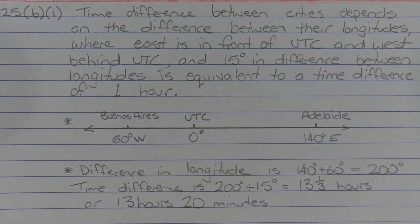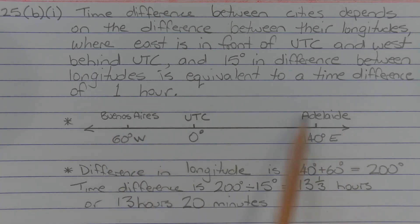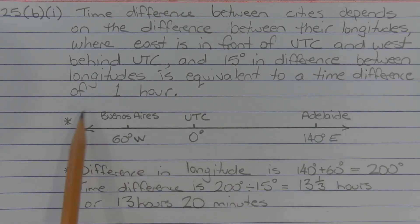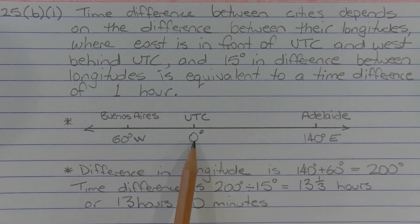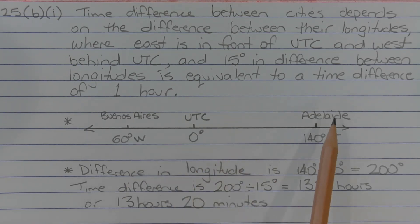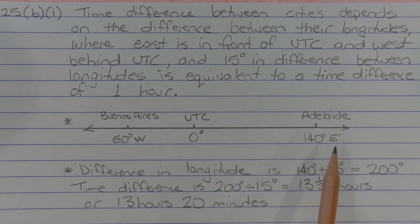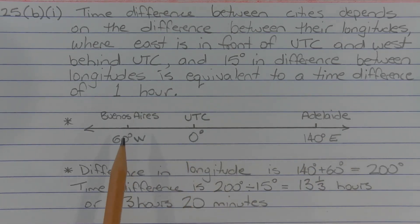Next, we want to find the difference in longitude between Buenos Aires and Adelaide. Here they are shown on a number line, with Buenos Aires shown as 60 degrees west of UTC, and Adelaide shown as 140 degrees east of UTC.